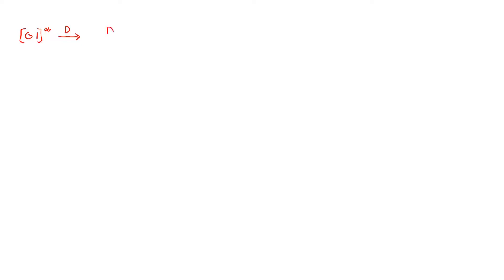So let us look at a few examples. Starting with the sequence (0,1) repeated to infinity: the D-transform is d — the D-transform of one period (0,1) — over 1 plus d squared, since 2 is the period. Our next example is the sequence (1,1,0) repeated: its D-transform is 1 plus d over 1 plus d cubed, since 3 is the period.